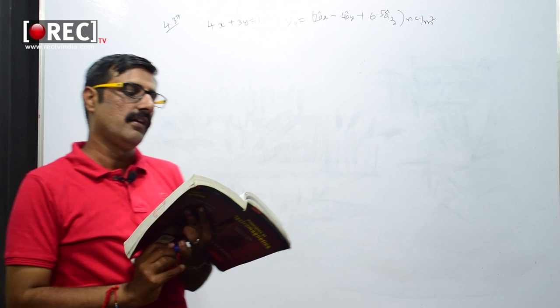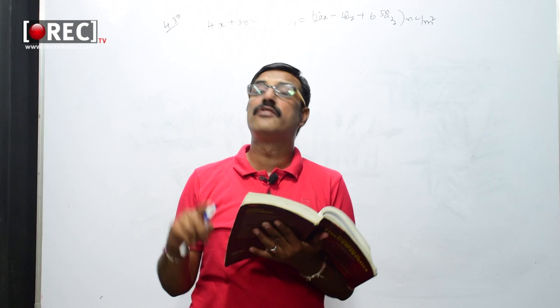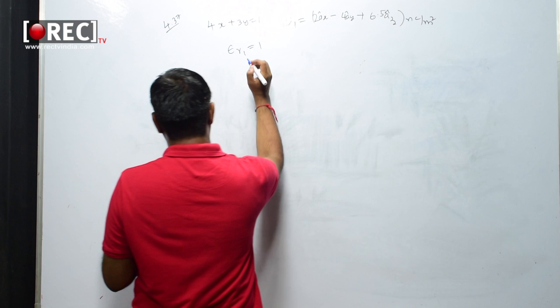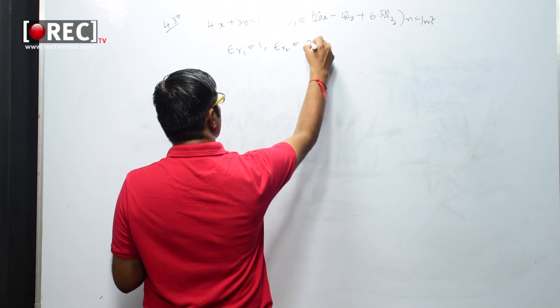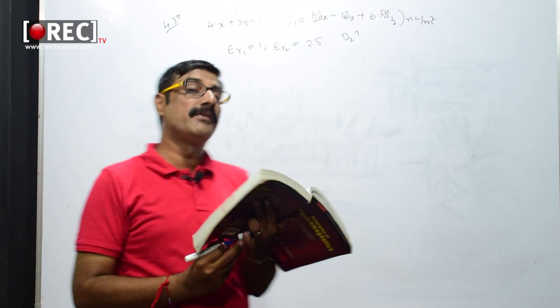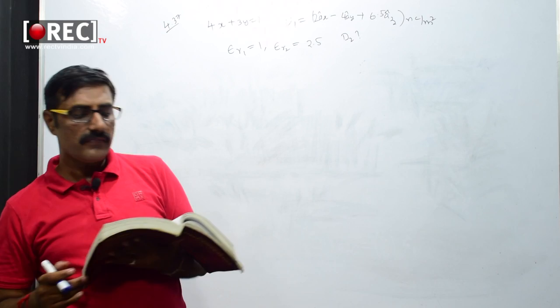Since region 1 is free space, ε_r1 = 1. Region 2 has ε_r2 = 2.5. We need to determine D2 and also the angle θ2 that D2 makes with the normal to the interface.